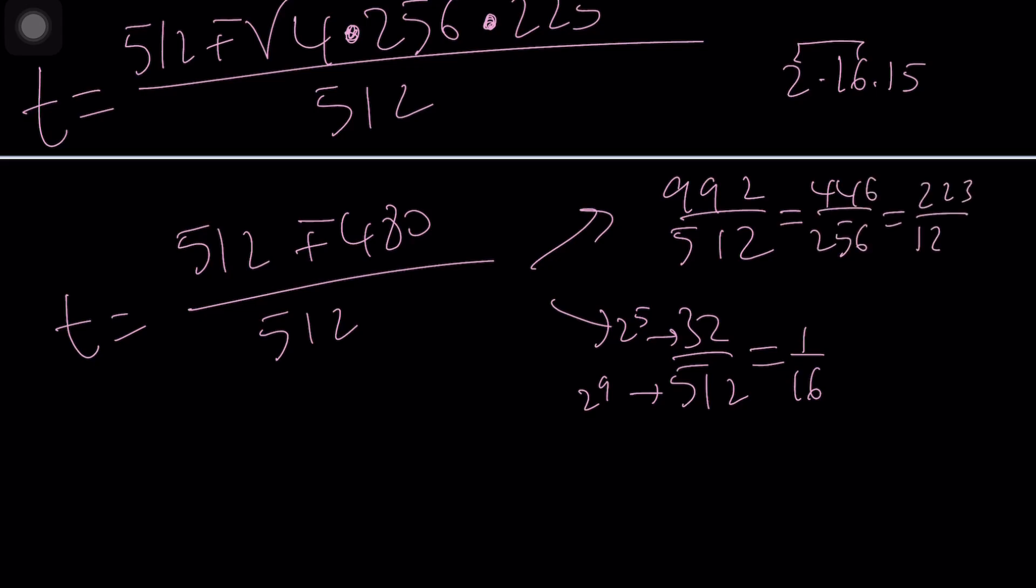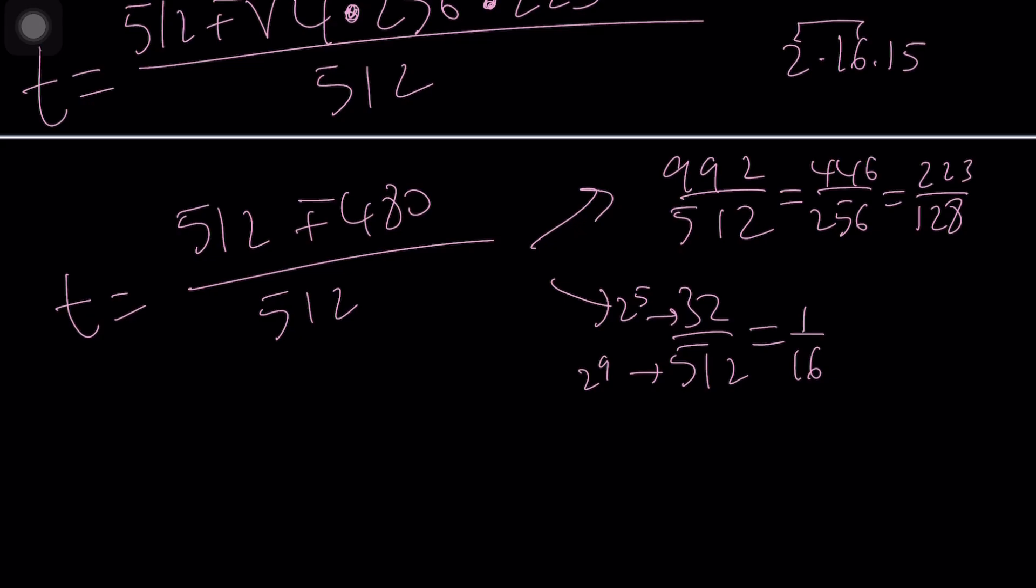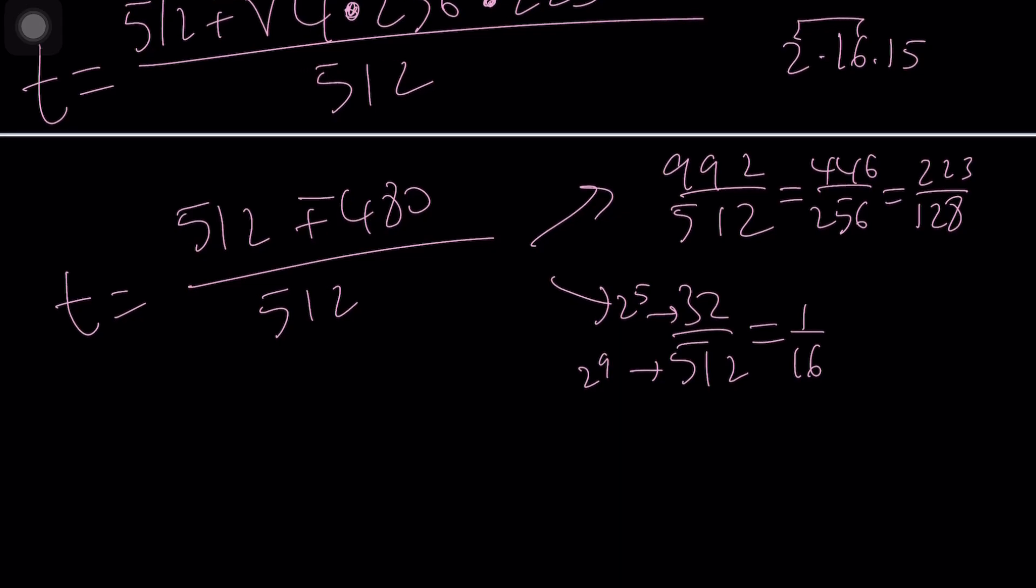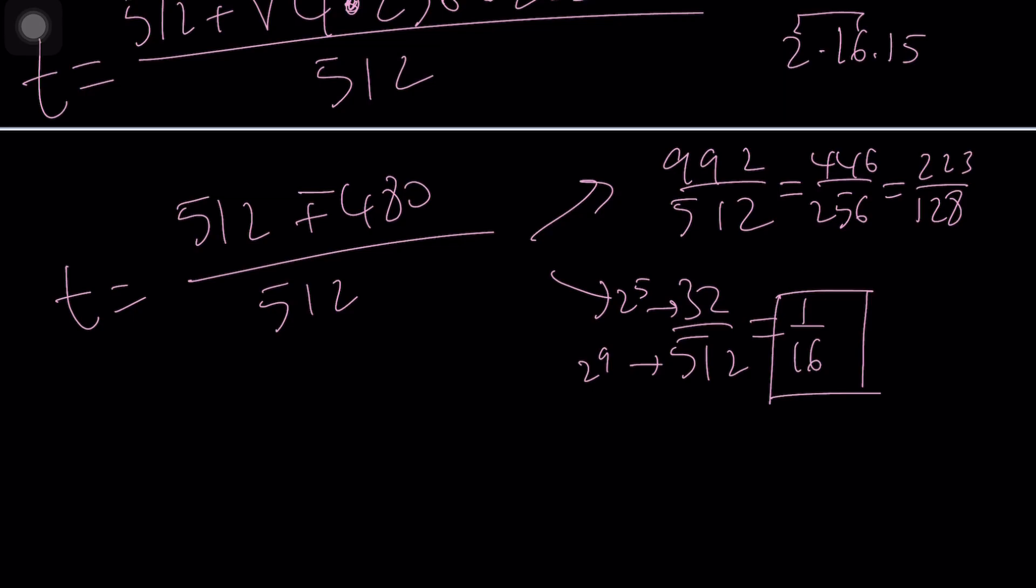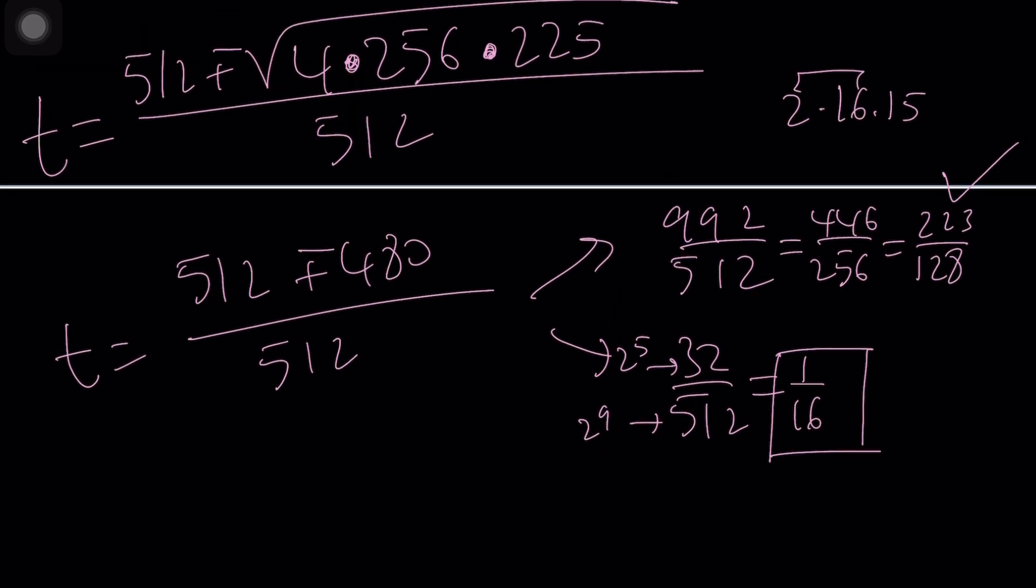I'm not sure if 223 is prime or not. It doesn't work for 7, 11, or 13, so I don't think it's divisible by any of the primes, so it's prime probably. Anyways those are the t values but let's just go with this one because 1 over 16 seems to be more interesting.